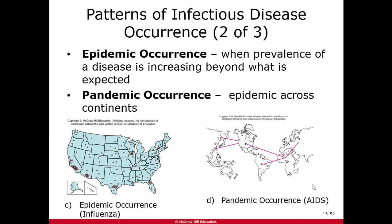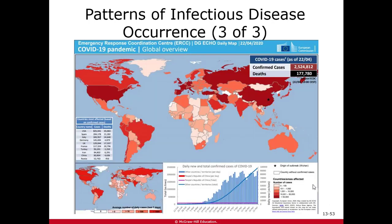A pandemic is when that epidemic spreads across continents. Your book gives AIDS as an example of a pandemic; however, the better known pandemic we are currently experiencing — which is so new it's not in any textbook yet — is COVID-19. It is spreading on every continent, making it a pandemic.